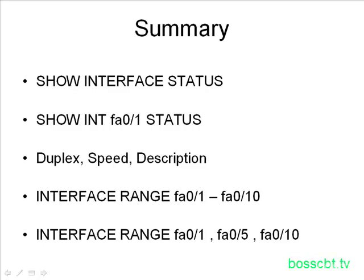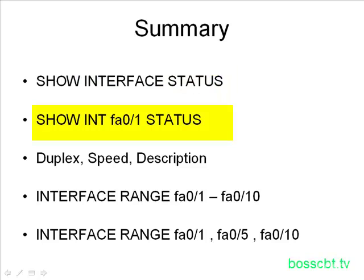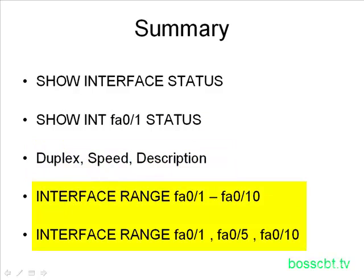To summarize everything we covered: we took a look at the show interface status command to see port descriptions, how interfaces are configured, and if left in auto-negotiation, what they actually negotiated to with the connected device. We also looked at how to view that information for just one particular interface. We made duplex, speed, and description interface configuration changes. And we looked at configuring ranges of interfaces — both a consecutive range and individual ports that are not consecutively ordered on the switch. That is the tutorial on switch interface configuration. Thanks for watching.